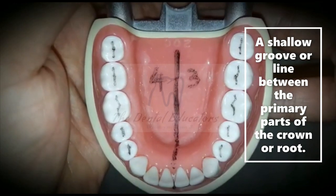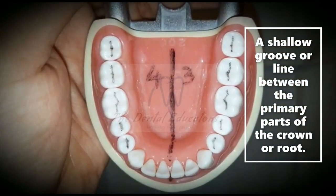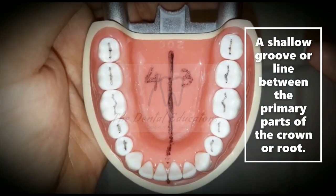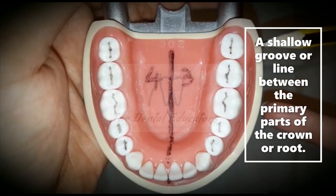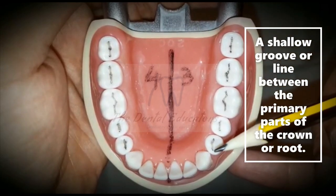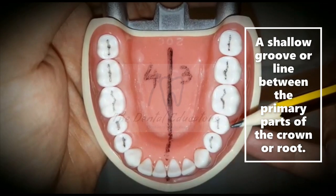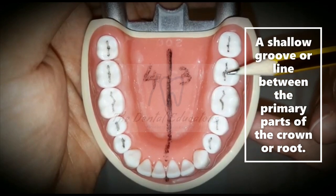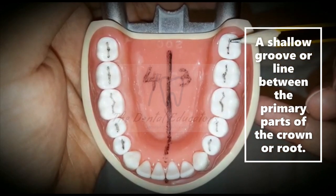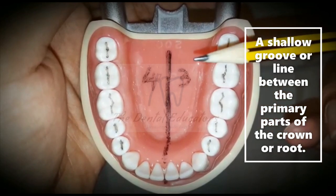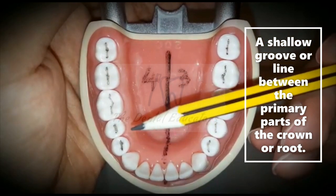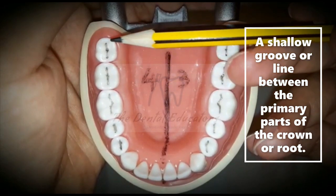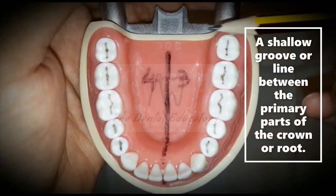In the mandibular arch, the central developmental groove is present in the premolars and molars of both the third and fourth quadrants, extending in the mesial-to-distal direction. These black linings show a shallow groove or depression present between the primary parts of the tooth.